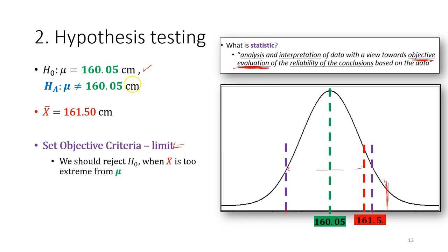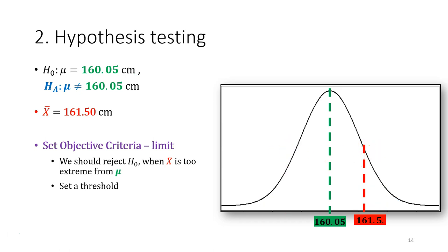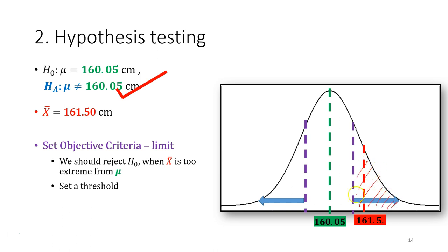If the sample mean falls outside the limit, we reject the null hypothesis and accept the alternative hypothesis. The limit acts as a threshold for our decision. If the sample mean falls inside the limit we accept the null hypothesis; if it falls outside — in what we call the rejection region — we reject the null hypothesis and go with the alternative.